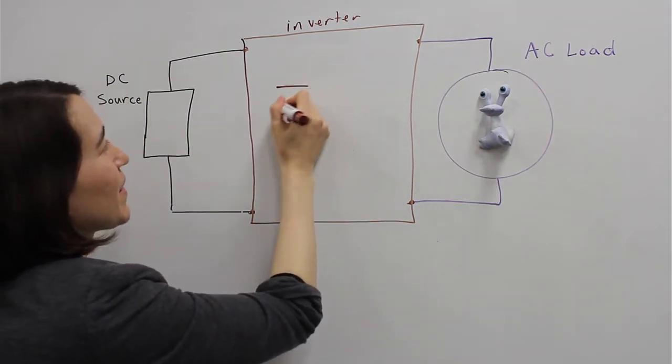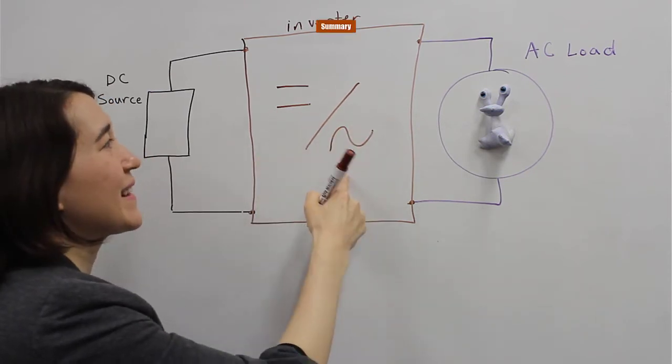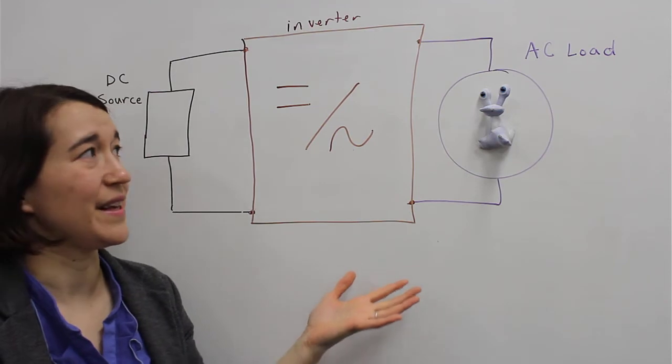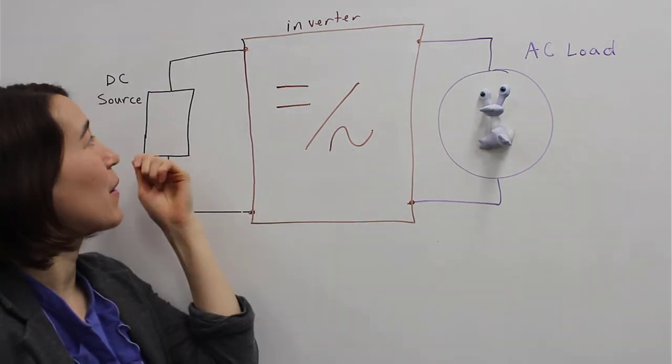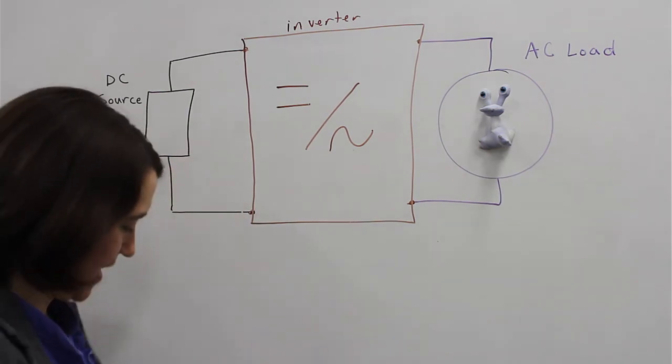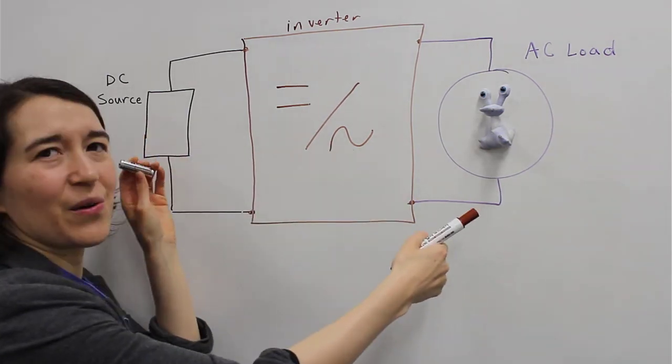So one way you can draw this as a really general symbol is to do a DC to an AC, and there you have the basics for your inverter of taking power from a DC source, like a battery, to an AC load like Valerie.